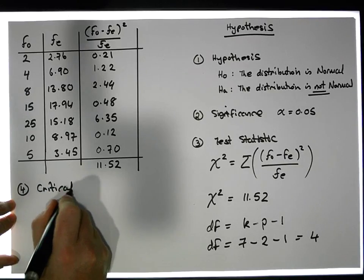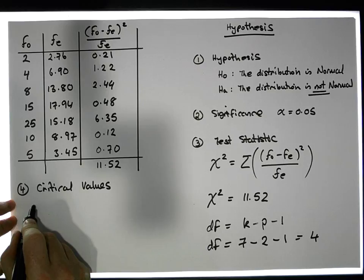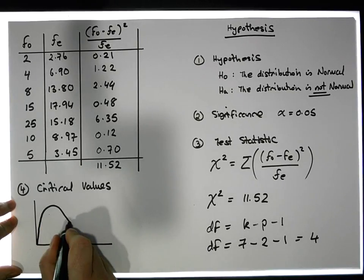Critical values. Now our critical values are based off a chi-squared distribution. The chi-squared distribution is a positively skewed distribution.